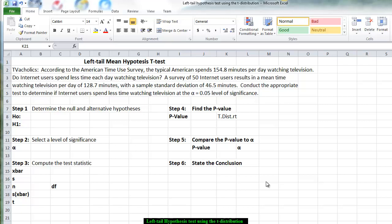According to the American Time Use survey, the typical American spends 154.8 minutes per day watching television. Do internet users spend less time each day watching television? A survey of 15 internet users resulted in a mean time watching television per day of 128.7 minutes, with a sample standard deviation of 46.5 minutes.